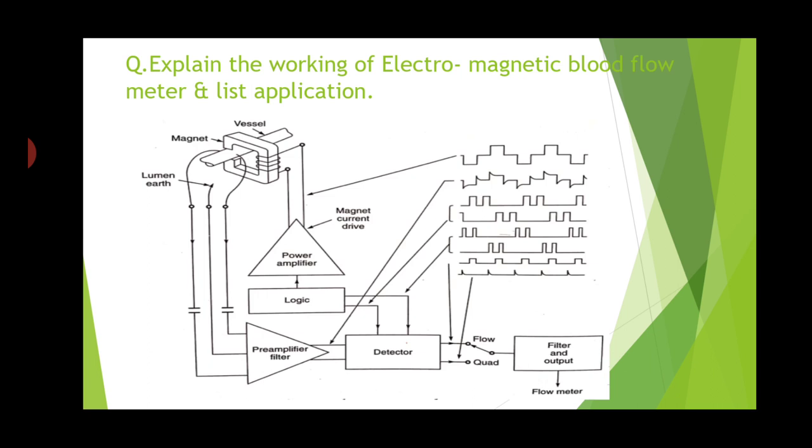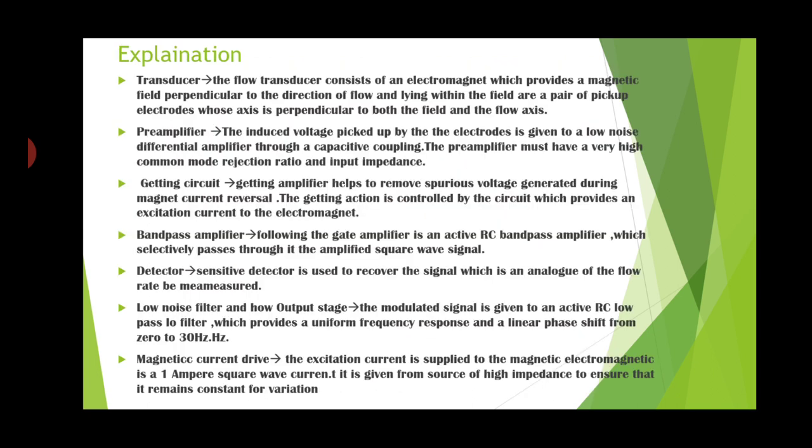Now we will see the working of the electromagnetic blood flow meter. The flow transducer consists of an electromagnetic magnet which provides a magnetic field perpendicular to the direction of flow. Within the field is a pair of pickup electrodes whose axis is perpendicular to both the field and the flow axis. The preamplifier receives the voltage picked up by the electrodes via a low noise differential amplifier through a capacitive coupling circuit.